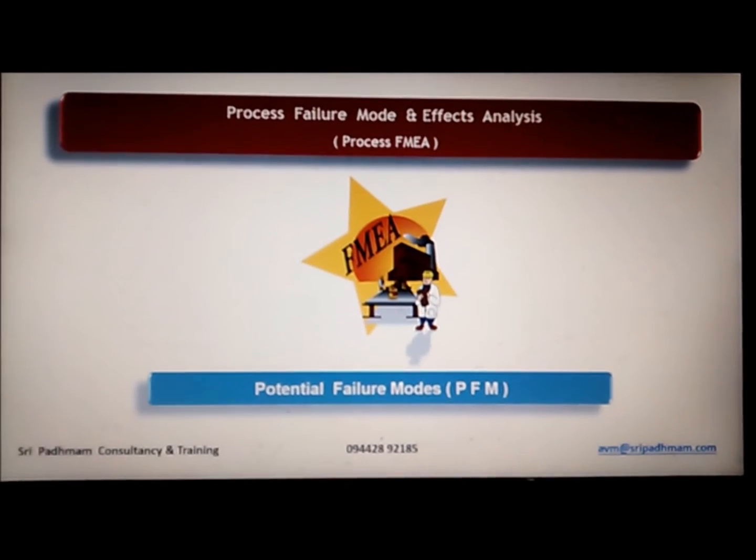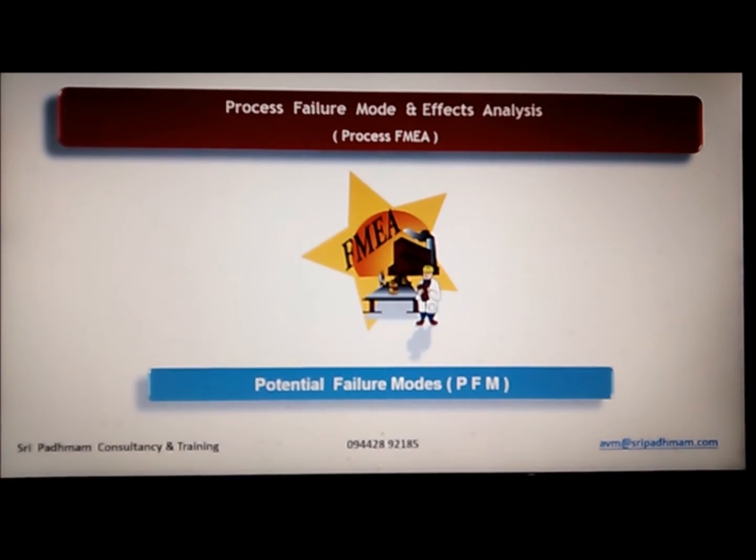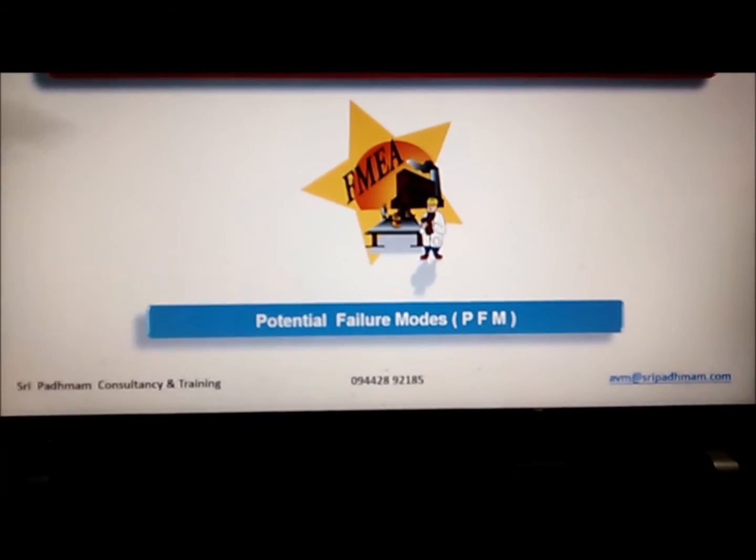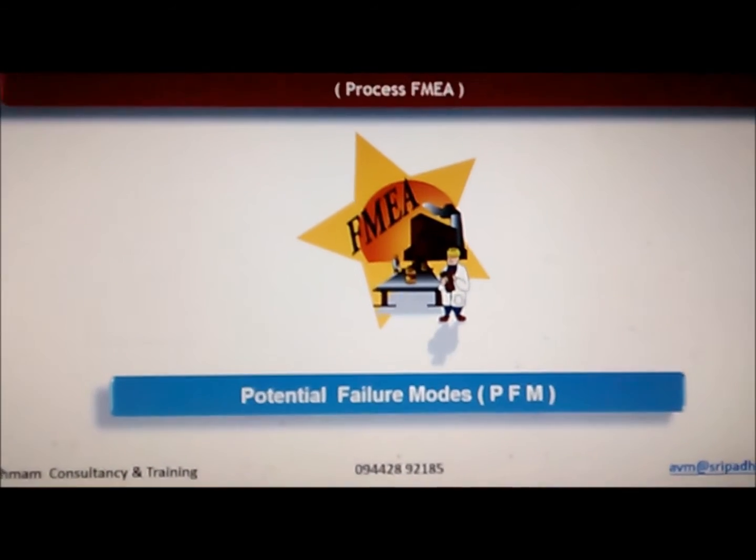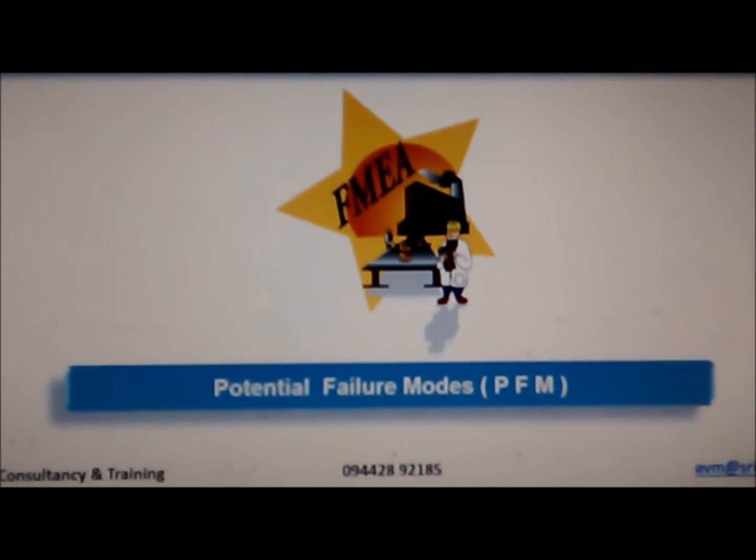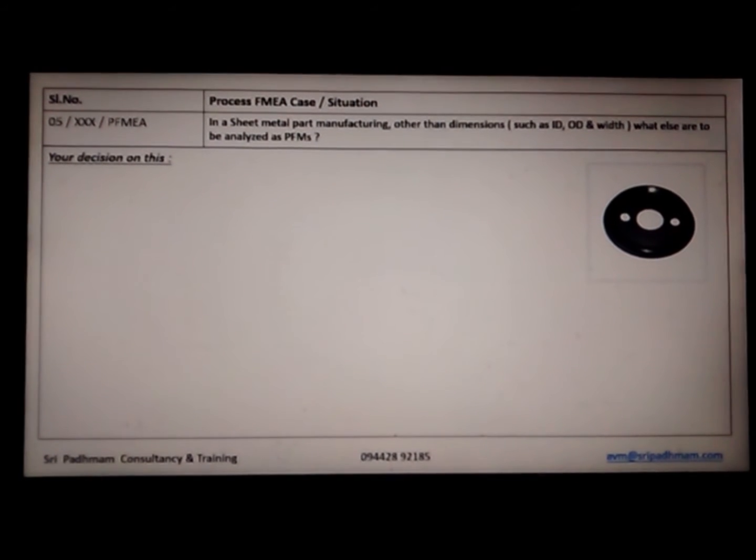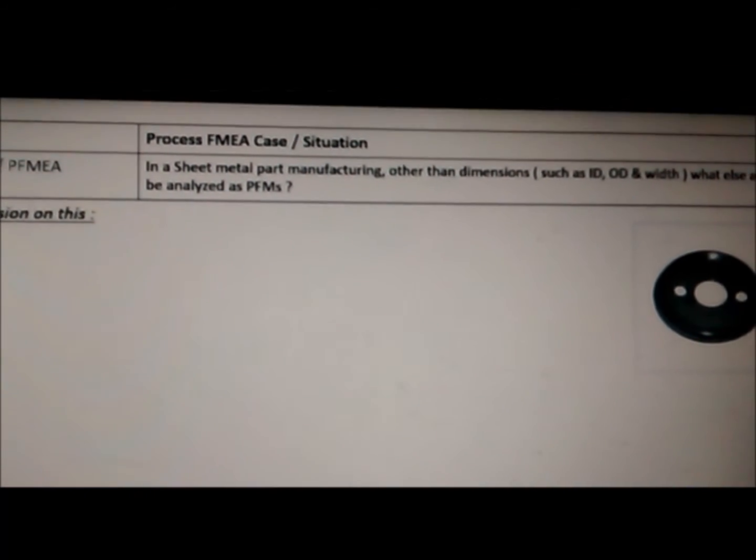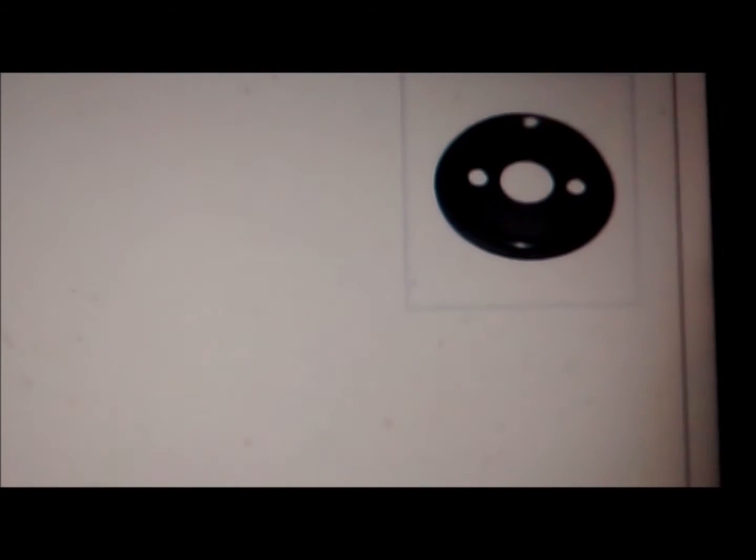A success of any FMEA starts with capturing all the requirements properly and also arriving at potential failure modes in a systematic way, wherein many companies or most of the companies are missing out. Let us take an example of a sheet metal process. The part is getting manufactured. An example is shown here, not the exact part, but an example.